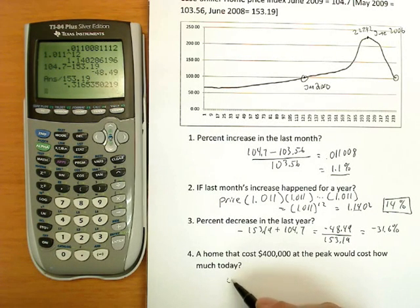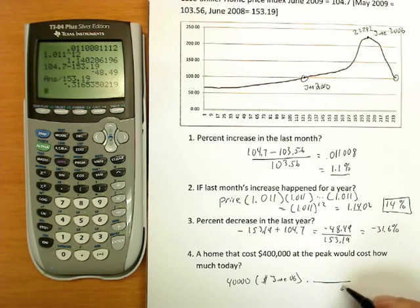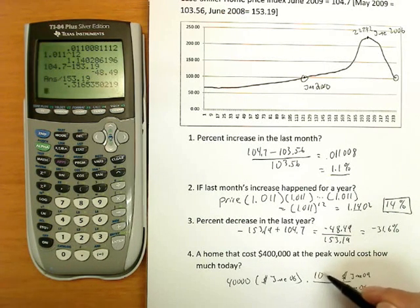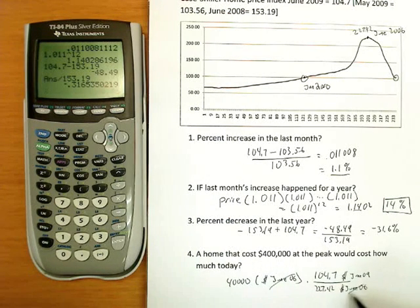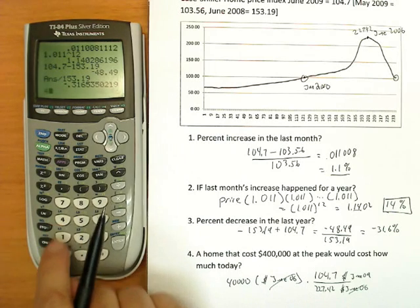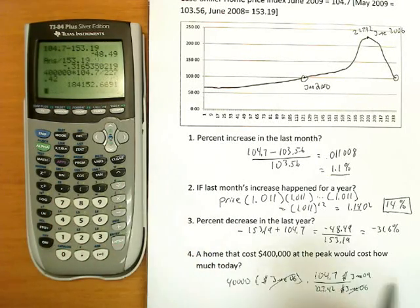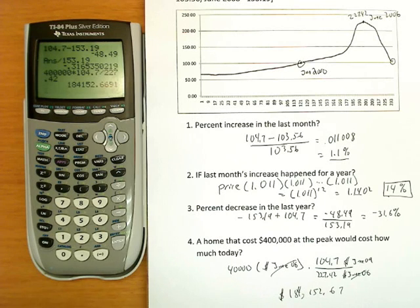Okay. A home that costs $400,000 at the peak would cost how much today? $400,000. That's dollars June of 06. We want those to go away. We want dollars today. Our most recent number, we can't actually do today, but the most recent number we have is June 2009. So we put that index number of 104.7 on top and the 227.42. And we can see we're going to have a fairly unhappy owner because this is about half. 400,000 times 104.7 divided by 227.42. And the proud homeowner now has a home with a value of 184,152, and 67 proud cents in his home. A tremendous drop and you see why so many homes are going into foreclosure today.